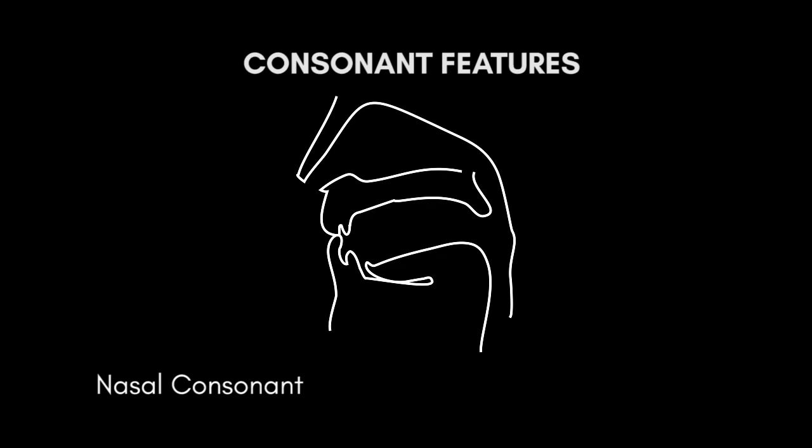The next feature is the manner of articulation. Manner of articulation is the way the airstream is affected as it flows from the lungs and out through the nose and mouth. The first manner is nasal consonants. Nasal consonants are created when you completely block air flow through your mouth and let the air pass through your nose. There are three nasal consonants in English: m, n, and ng.